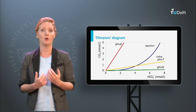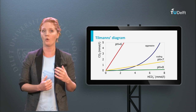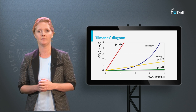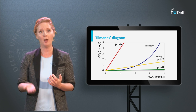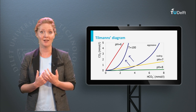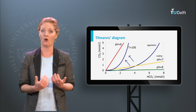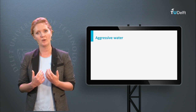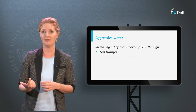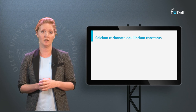The graphic presentation of this is known as Tillmann's diagram or Tillmann's curve. The blue equilibrium line separates the aggressive water — or calcium carbonate dissolving water — above the line, and the calcium carbonate precipitating water below the line. The curve is temperature dependent and will shift upwards at higher temperatures. This illustrates that when water in equilibrium is heated, for example in a water cooker, it may become calcium carbonate precipitating, causing scaling on the equipment. The pH of aggressive water can be increased by the removal of CO₂, for example by gas transfer, adding a base, or a reaction with calcium carbonate, for example during marble filtration.